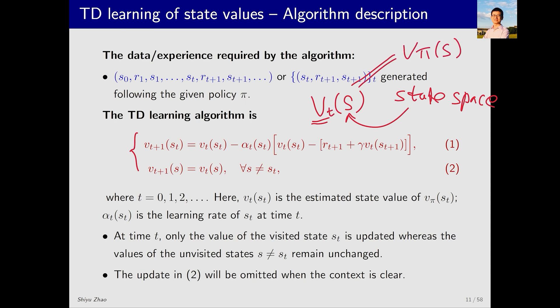V at time t has a subscript t, representing the estimated value at time t. At time t+1, it becomes the estimated value at time t+1. In this equation, you also see s_t. What is s_t? It is the state visited at time t within an episode. An agent can visit only one state at a time. What does this algorithm do? It consists of two parts. Let's look at the first part. At time t, I am in state s_t. I have some data and what do I need to do? I need to update the value corresponding to s_t. The value at time t is V_t, and after updating, the value becomes V_{t+1}.